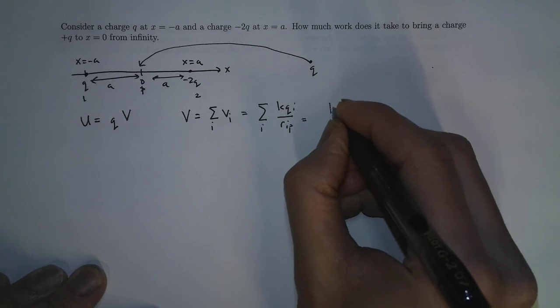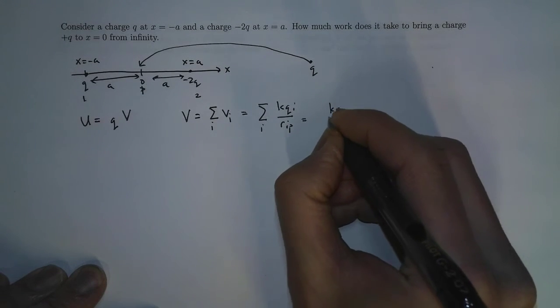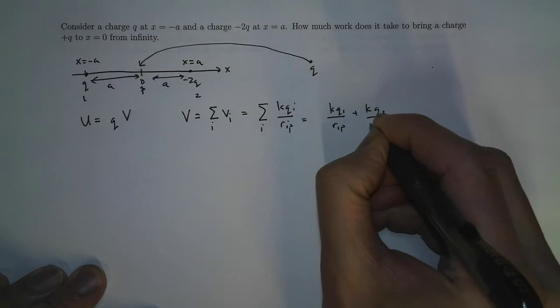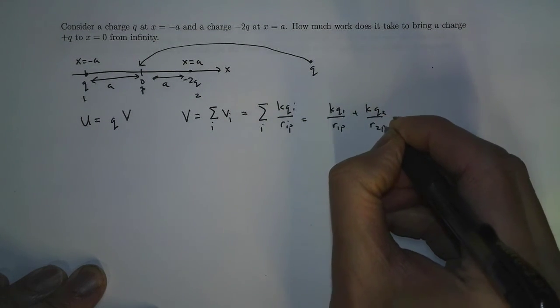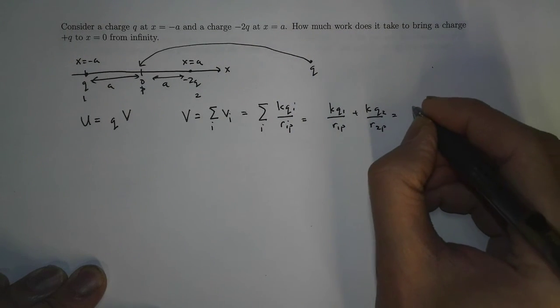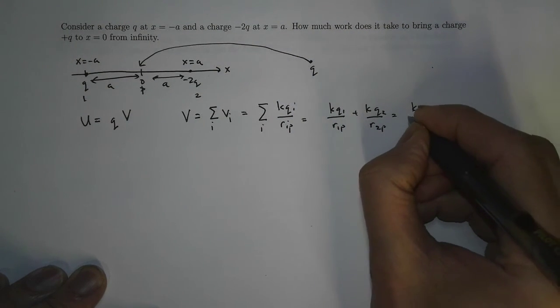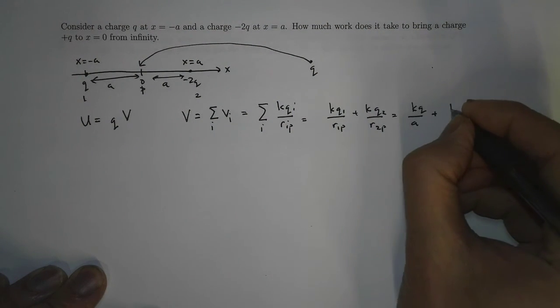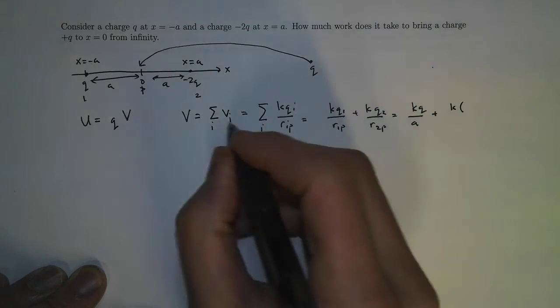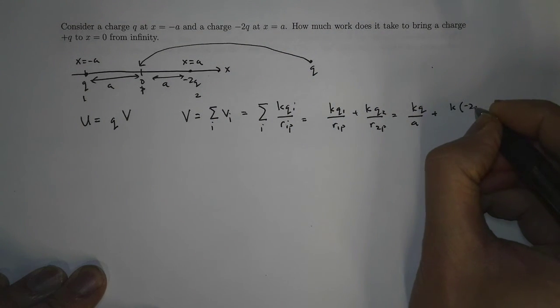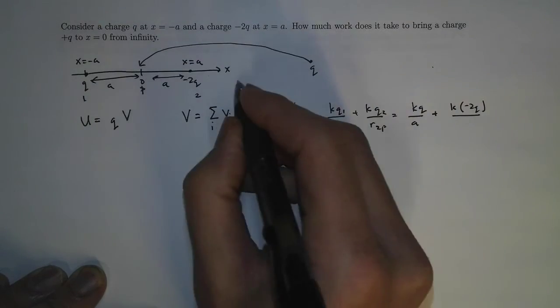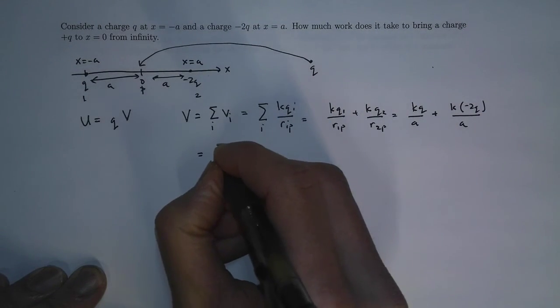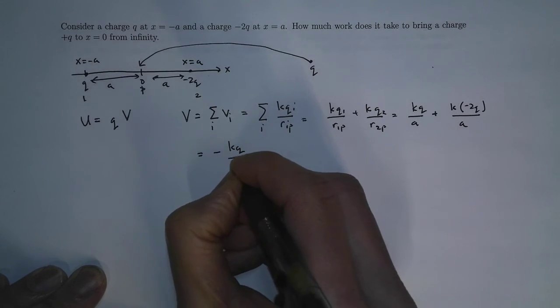So this is going to be k q1 over r1p plus k q2 over r2p, which is kq over r1p plus k times charge 2, -2q, over distance a again. And so at the end of the day you get -kq/a.